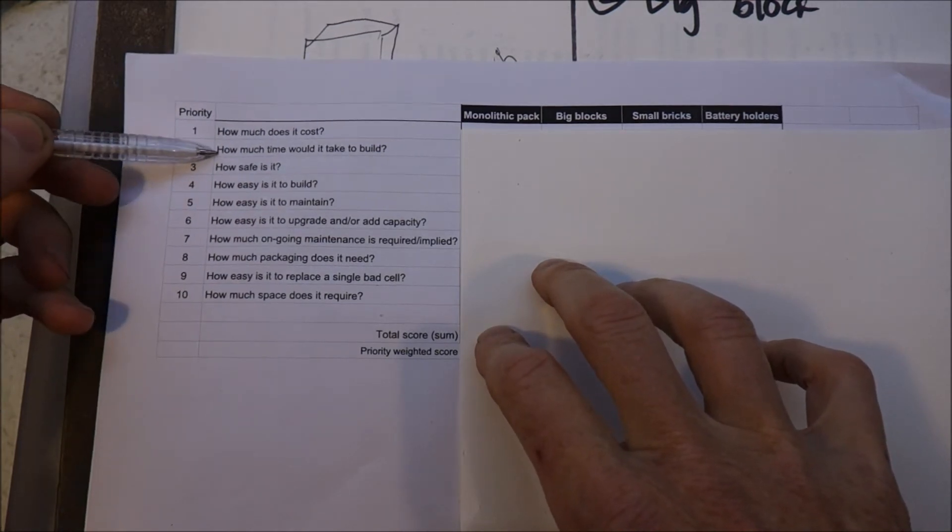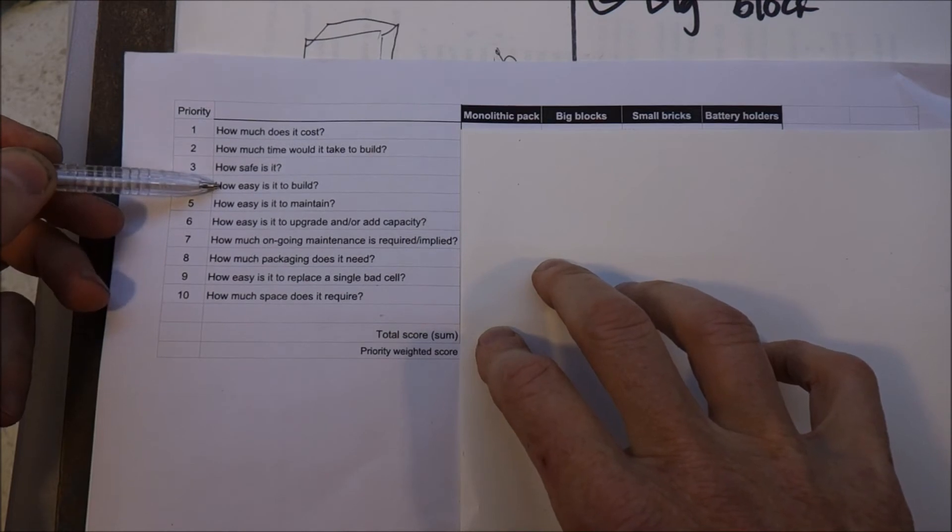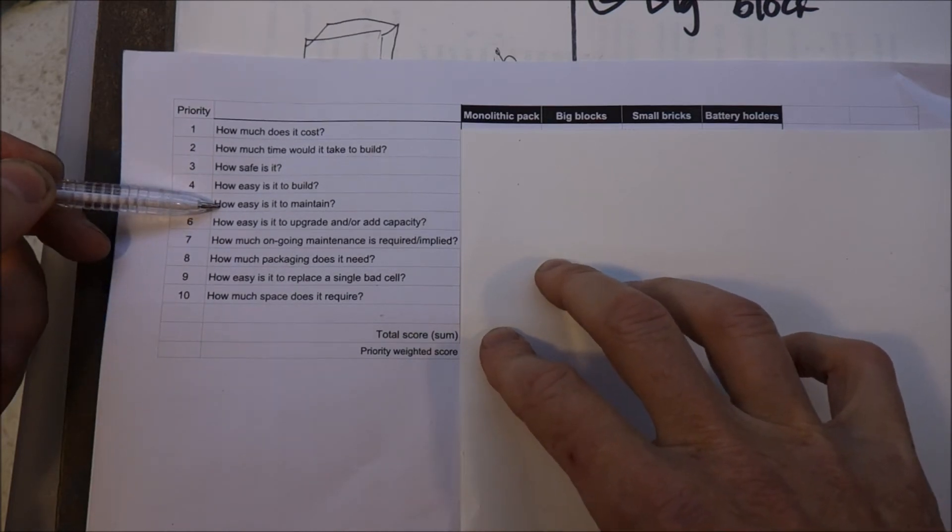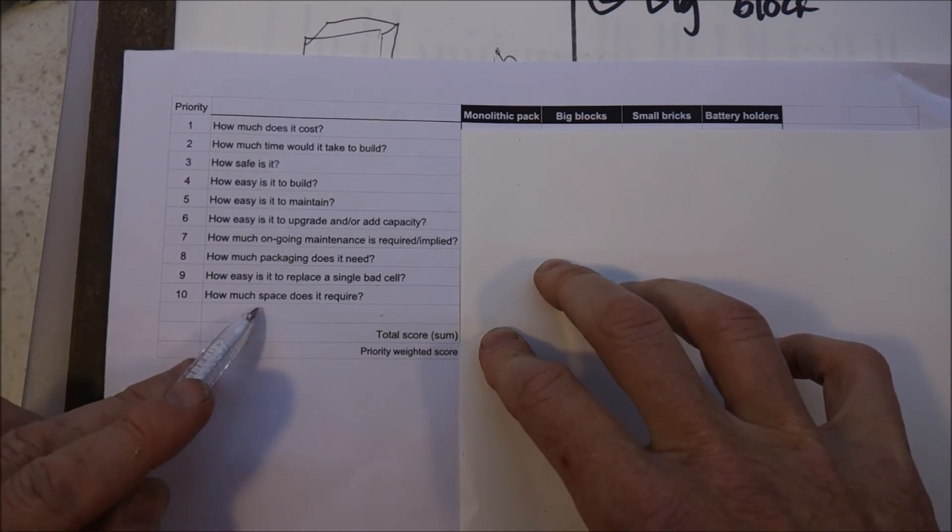And I've got a series of questions here that I've listed in priority order. This is my priority: how much does it cost, how much time does it take to build, how safe is it, how easy is it to build, how easy is it to maintain, and so on. Down to how much space does it require, which is my lowest priority.